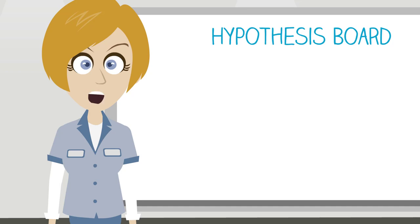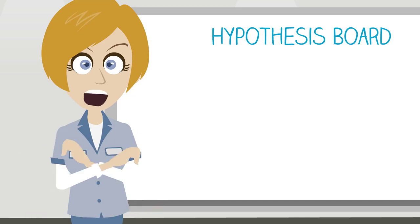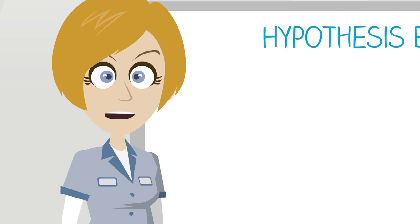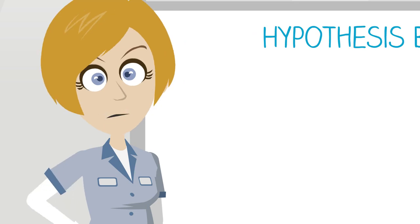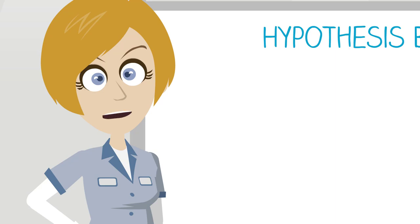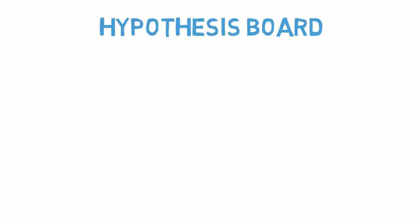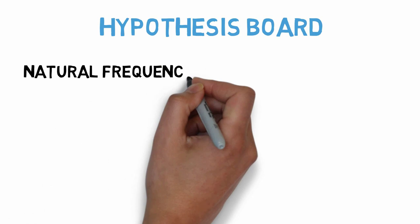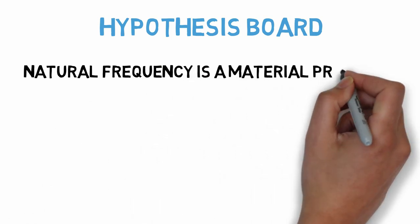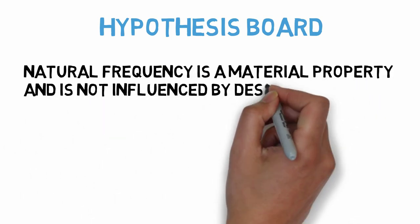I know that all materials exhibit a natural frequency and have a resonance frequency. If you look very closely at a few skyscrapers, you might see them swaying in the wind a bit. Tall buildings and bridges are mostly made of the same materials, so they must have the same natural frequency. Therefore, I will make the following hypothesis: natural frequency is a material property and is not influenced by design.